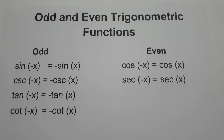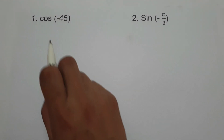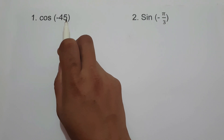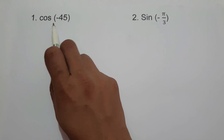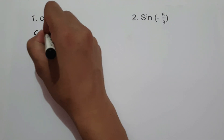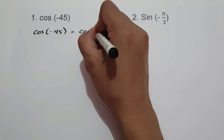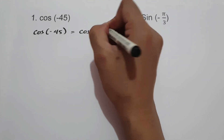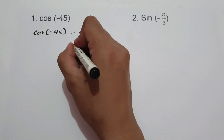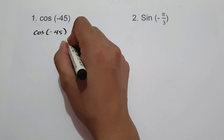Now, how can we apply this information? Let's start with an example. On the first example, we have cosine(-45°). Cosine is an even function. Therefore, cosine(-45°) = cosine(45°), and cosine(45°) = √2/2. And this will be our answer.